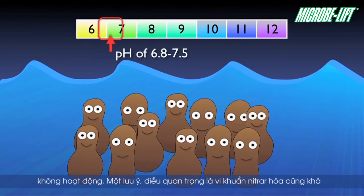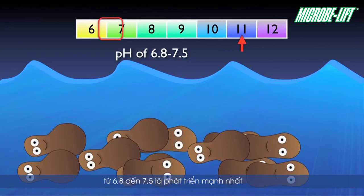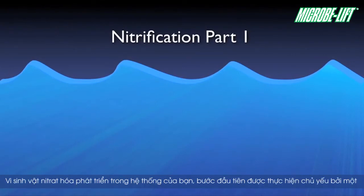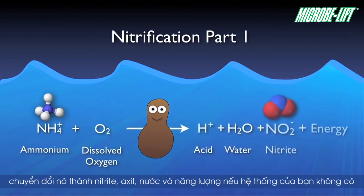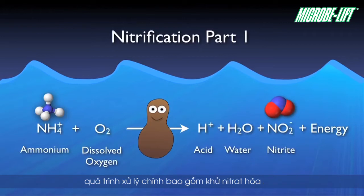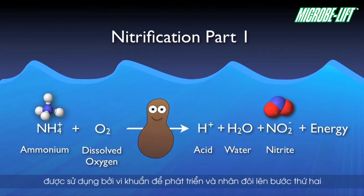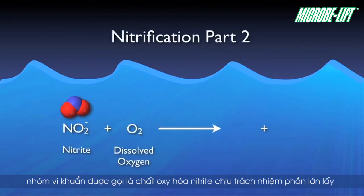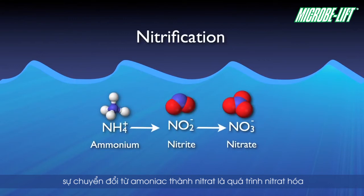It is important to remember that nitrifiers are also quite sensitive to pH, tending to function most comfortably in water with a pH between 6.8 and 7.5. Once a healthy population of nitrifiers has developed in your system, the first step — performed largely by a group of bugs known as ammonia oxidizers — will take the ammonium and DO and convert it into acid, water, nitrite, and energy. If your system doesn't have adequate alkalinity, the acid produced here could create inhospitably acidic conditions for the bacteria, resulting in major process hiccups including loss of nitrification. The second step, for which nitrite oxidizers are largely responsible, takes that nitrite and more DO and converts it into nitrate and energy. This conversion from ammonia to nitrate is nitrification.